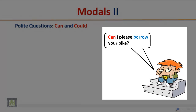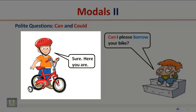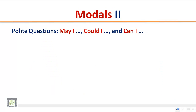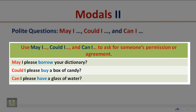Can I please borrow your bike? Sure, here you are. Using 'may I,' 'could I,' and 'can I' to ask for someone's permission or agreement. Examples: May I please borrow your dictionary? Could I please buy a box of candy? Can I please have a glass of water? The modal auxiliary in these examples is used to ask for permission or agreement.